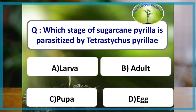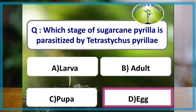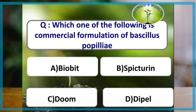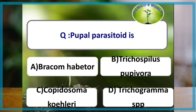Which stage of sugarcane pyrilla is parasitized by Tetrastichus pyrilla? Eggs of pyrilla are parasitized by Tetrastichus pyrilla. Which of the following is a commercial formulation of Bacillus popilliae? Doom is a commercial formulation of Bacillus popilliae.